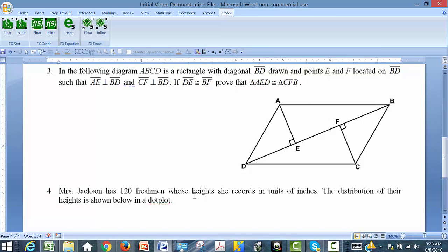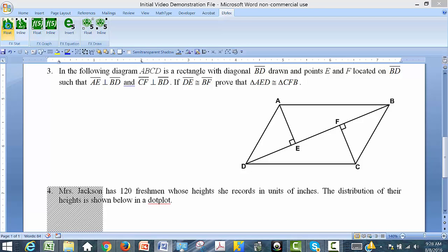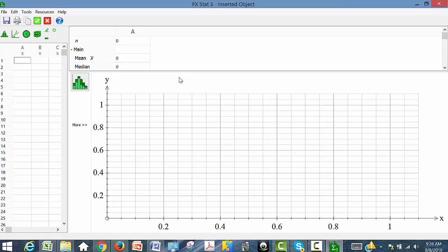Let's take a look at a statistics graph. Now, in number four, I didn't set up the whole problem, but we've got Mrs. Jackson. She's a 120 freshman whose heights are recorded in units of inches. The distribution of their heights is shown in a dot plot. Or maybe we want a histogram. Regardless, for this, I'm going to use FXStat. Let's go into FXStat and do a floating diagram. And what you'll notice now as we go into FXStat is that it's going to look a little bit different than FXDraw. Considerably different. Here, we can put in data. Now, we can put in data the way that you would just enter it manually.